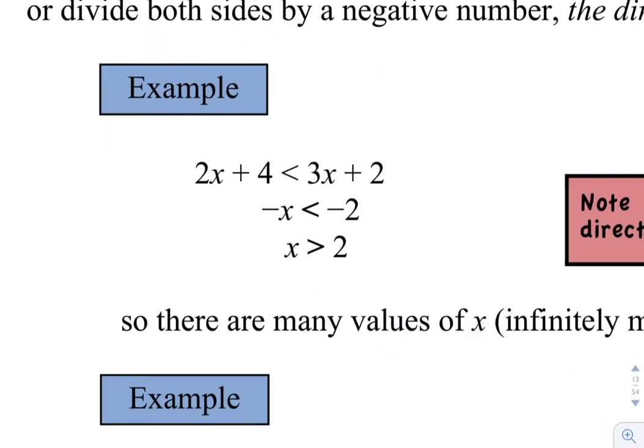So if you look at this one here my first step here is I've subtracted 3x from both sides. So 2x minus 3x gives us negative x and then I've subtracted 4 from both sides. Okay and doing that 2 minus 4 gives me negative 2 on that right hand side there. So when I've done that I get down to this negative x is less than negative 2. All right and then my last step here I've divided both sides by negative 1 to go from here to here.